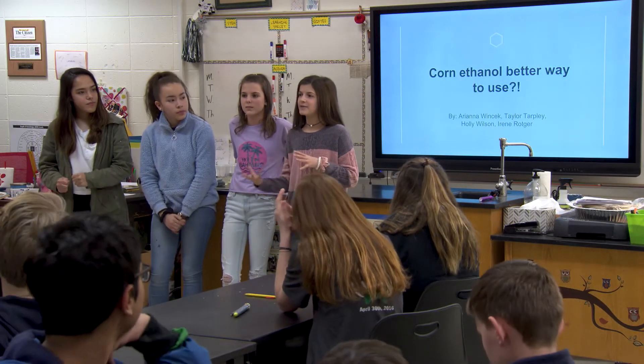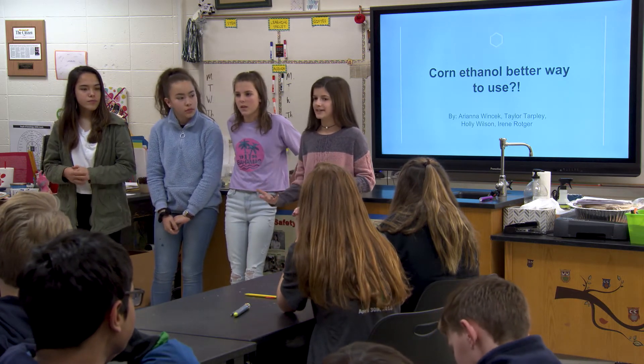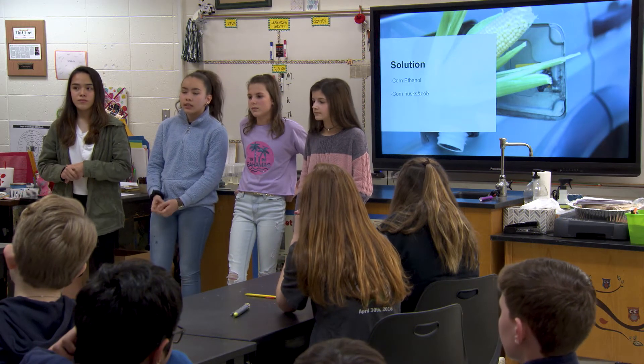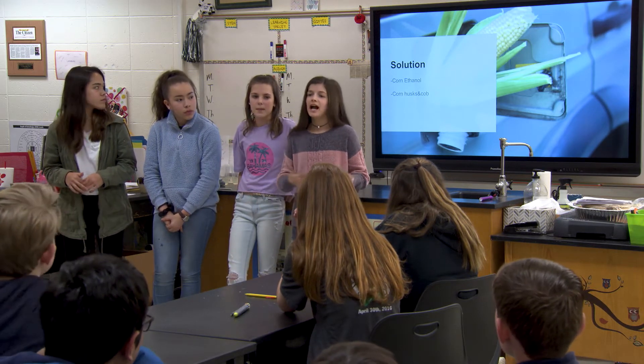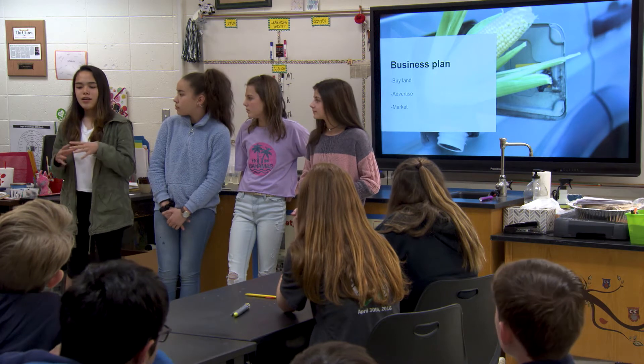We're here to pitch our idea of using corn ethanol as a biofuel, but in a different way. Currently, 40% of corn is used for biofuel, but only one part of the corn is used. We figured you can use the husks instead. A lot of corn husks get wasted every year — you see trash cans full of them at the supermarket — and we can turn them into biofuel. You could even make your own biofuel at home from husks and cobs. Our business plan is to market it to gas stations for motor vehicles, advertise through commercials, and buy land to grow the corn and produce the ethanol.